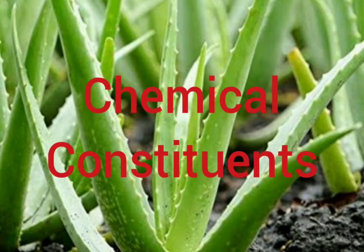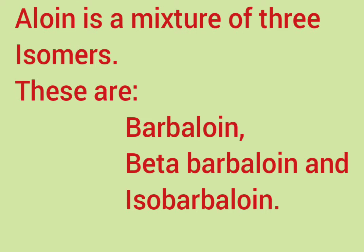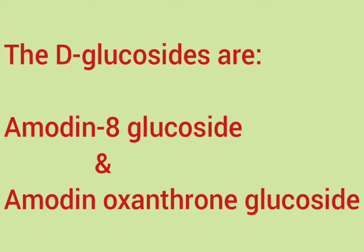Chemical constituents. The constituents of Aloe are aloin, D-glucosides, and Aloe resin. Aloin is a mixture of three isomers: Barbaloin, Beta-Barbaloin, and Isobarbaloin. The D-glucosides are emodin-8-glucoside and emodin-oxanthrone-glucoside. The resin contains Aloe resin.